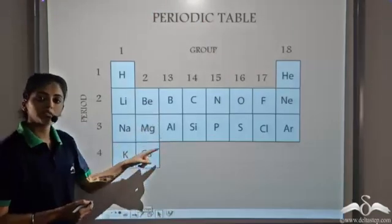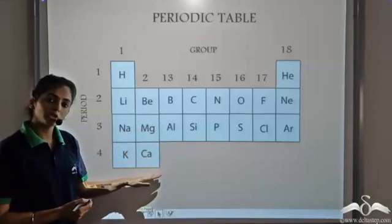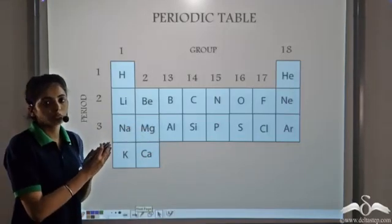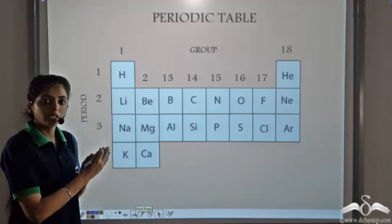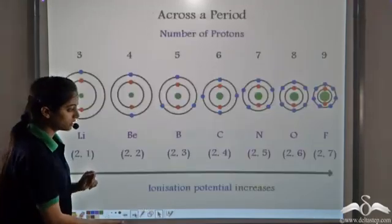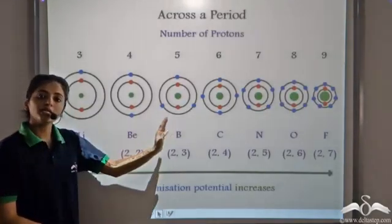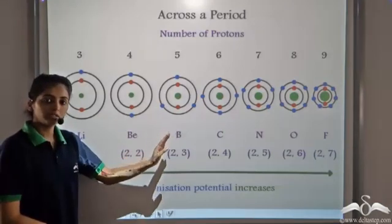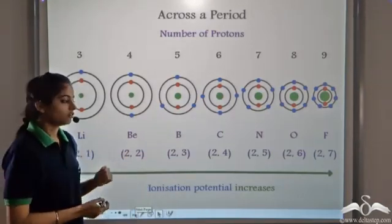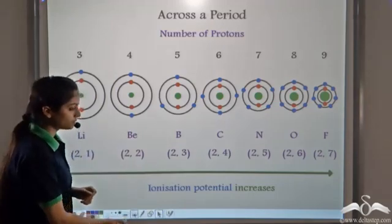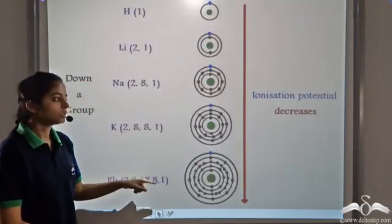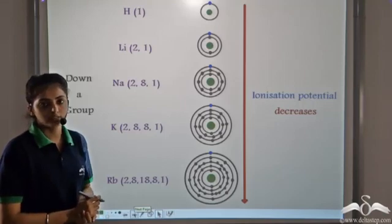If we look at the periodic table — we have taken a part of the periodic table — we will see how ionization potential varies. From left to right in a period, the ionization potential increases. And from top to bottom in a group, the ionization potential decreases.